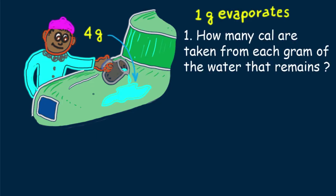Question. How many calories is taken away from each gram of water that remains? Can you see it's 540 divided by 3, which is 180 calories? If so, yum!